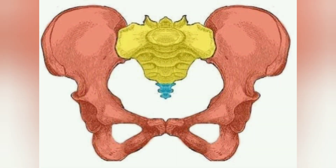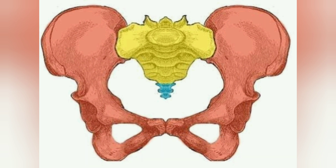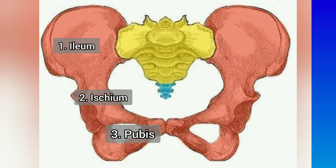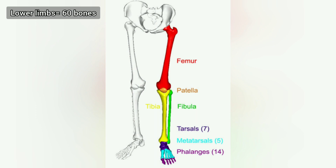Pelvic: two bones total; each side is one pelvic bone, also called the innominate bone or hip bone. Within this bone, three bones are fused: number 1, ilium; number 2, ischium; number 3, pubis. Lower limbs: total 60 bones.